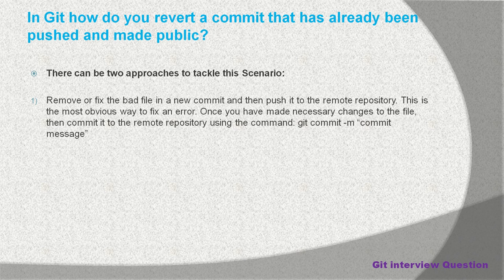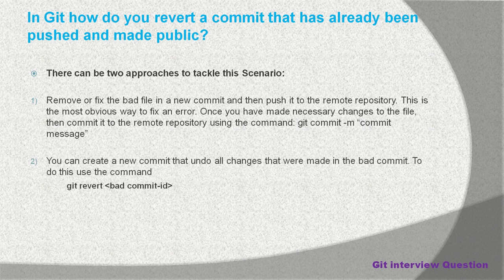However, if you have made changes in many files, reverting those manually will be very tedious. The second approach is to create a new commit that undoes all the changes made in the bad commit. To do this, use the command: git revert <bad-commit-id>. This is the better approach when a bad commit has already happened.